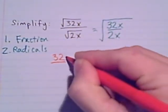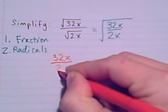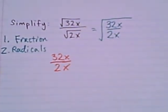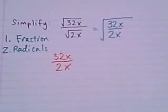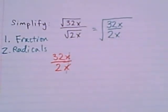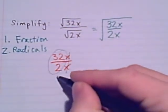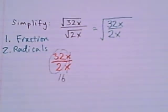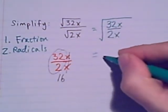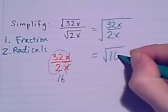32x over 2x. So we do have x over x, that can be cancelled. And the 32 over 2, this divides evenly, it equals 16. So just by thinking about simplifying the fraction, I've made great progress in this problem. This fraction, it's now just a 16.